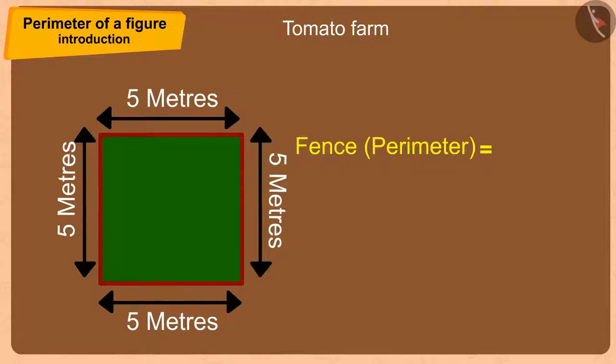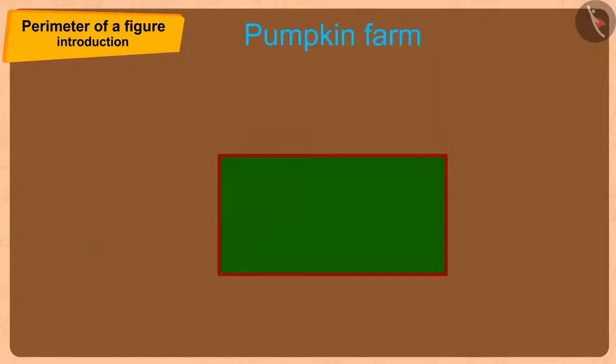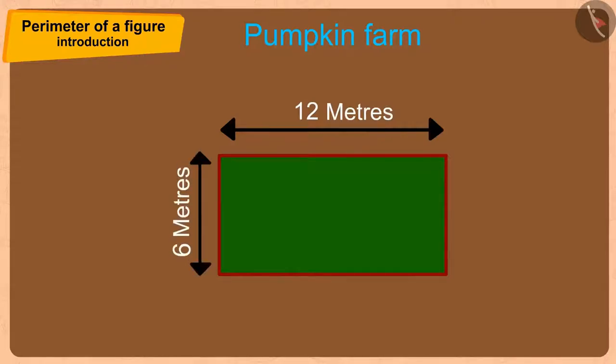In this way, Bhola used 4 times 5 or 20 meters long wire to make a square-shaped fence. The rectangle-shaped fence is 12 meters in length and the width is 6 meters.